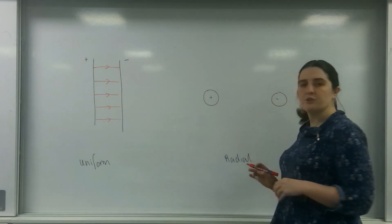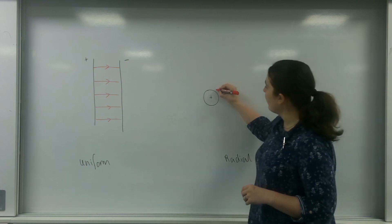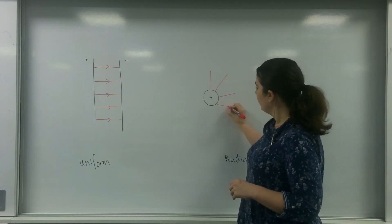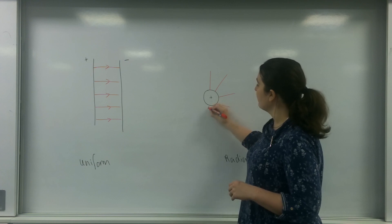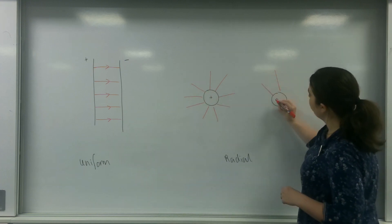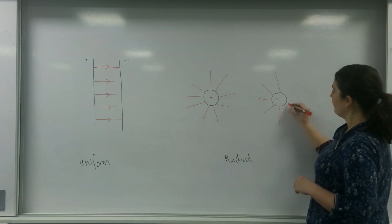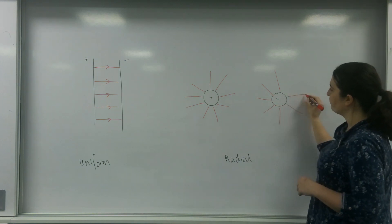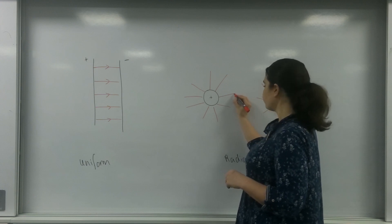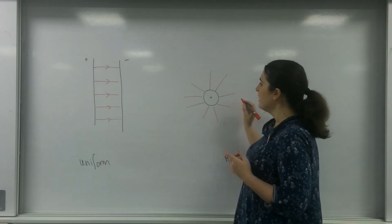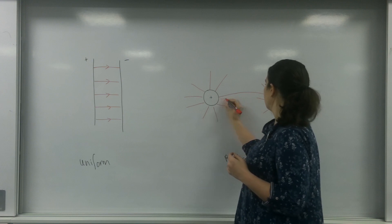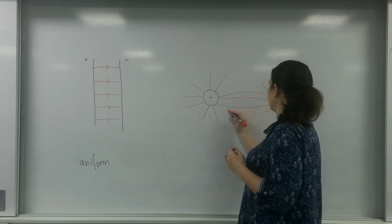In a radial field, they spread out in sort of like a sun really — they spread out radially, so they're getting further and further apart. It's important to remember that the same rules apply: field lines go from positive to negative.